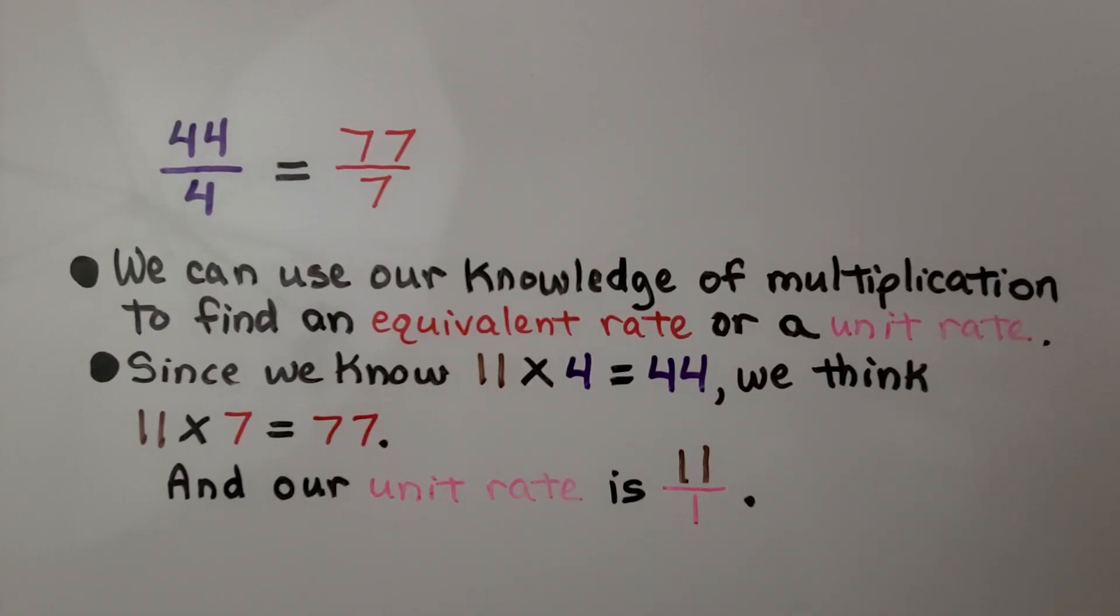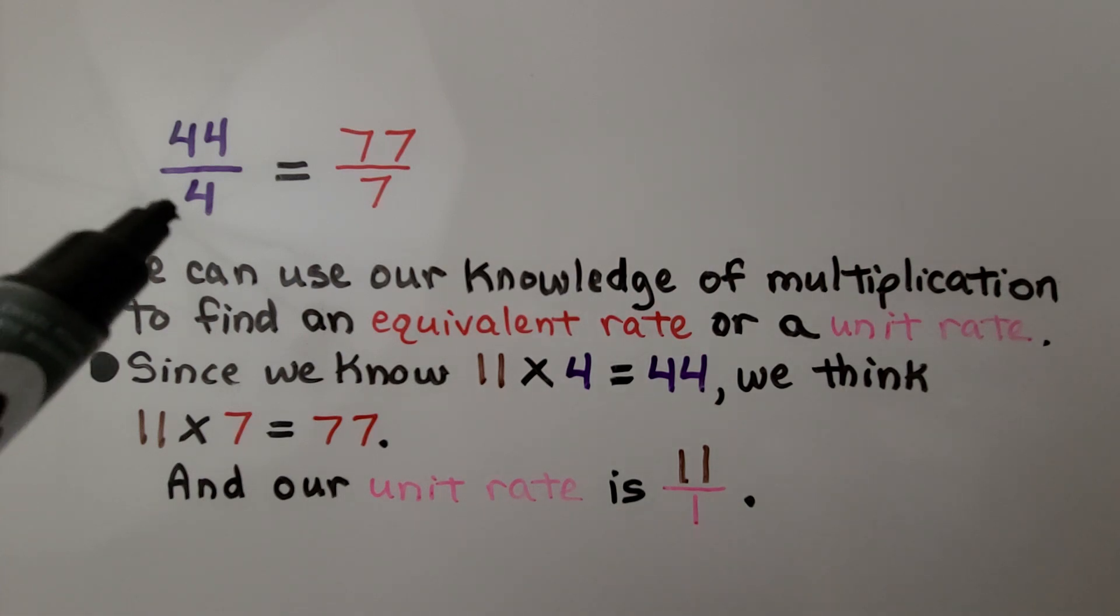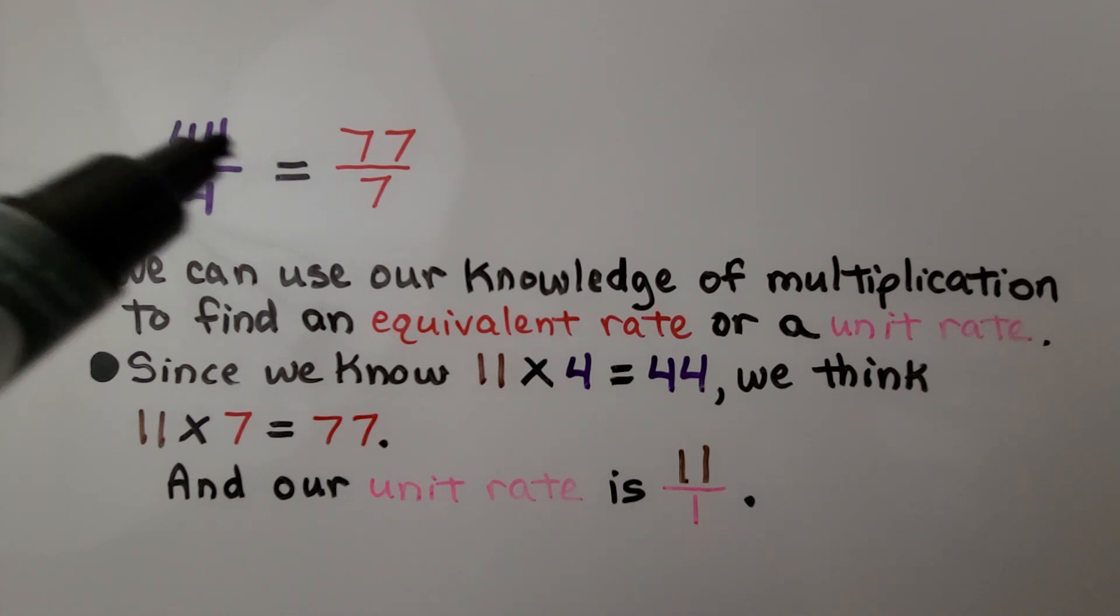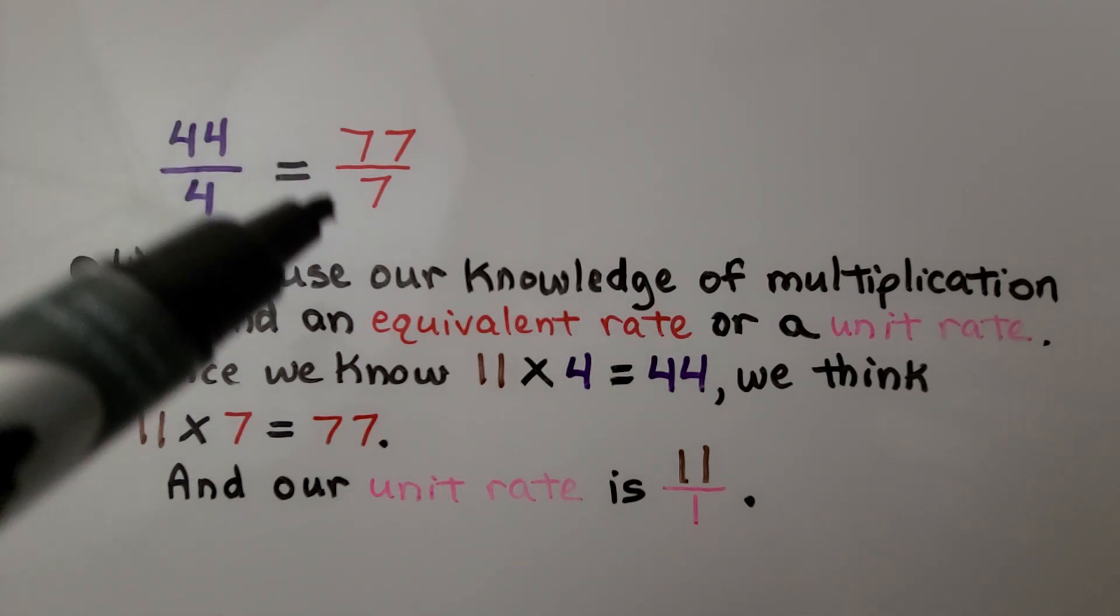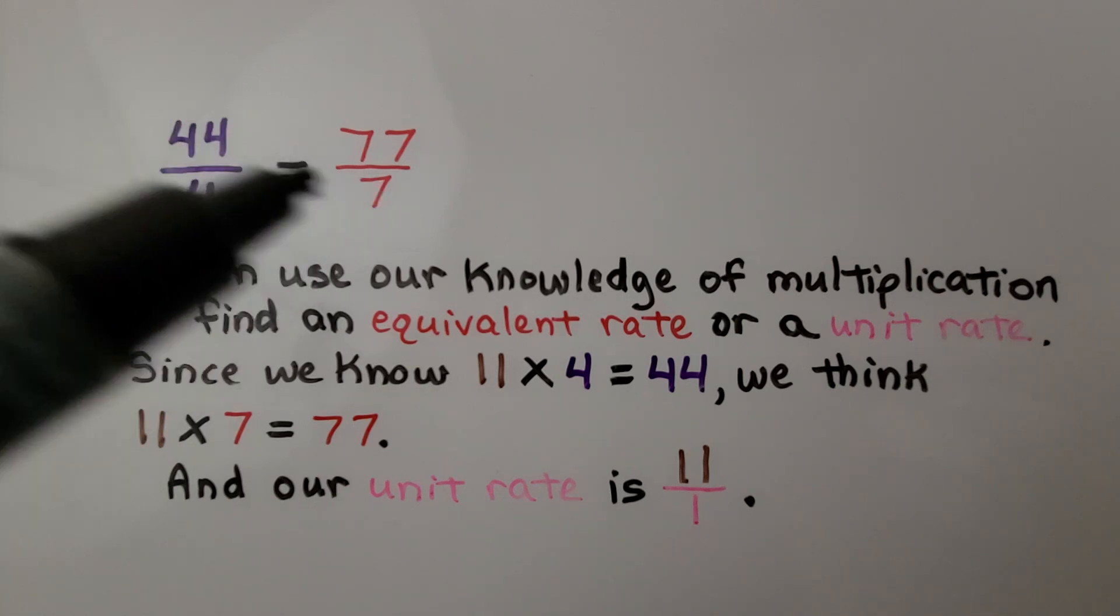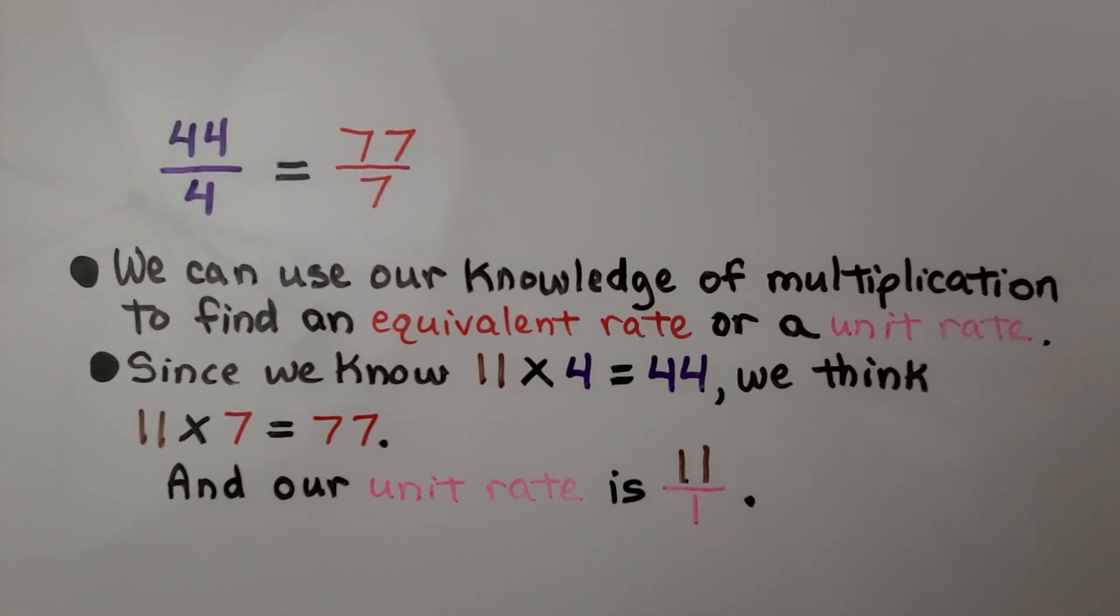We can use our knowledge of multiplication to find an equivalent rate or a unit rate. Since we know 11 times 4 is 44, we think, well, 11 times 7 is 77. We have equivalent rates, and we know our unit rate is 11 for every 1. So if we know our multiplication facts, we could do this in our head. We could use mental math.